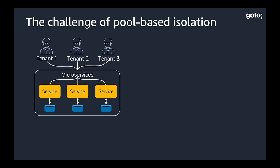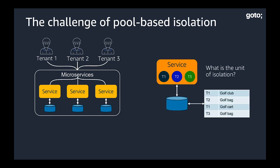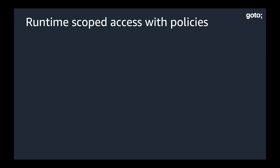Imagine we have three tenants coming in, sharing three microservices, all running in the same process space — we need some notion of isolation. The real challenge is that if these tenants are all running side by side, each reaching out and touching some data that's partitioned, how do we ensure that tenant one can't somehow access the data of tenant two or cross a boundary to some other resource? This is the fundamental challenge of pool-based isolation. The basic approach is that you need some notion of runtime scoped access — some way at runtime to go get policies and credentials that will control and scope your access to ensure you don't cross a tenant boundary.